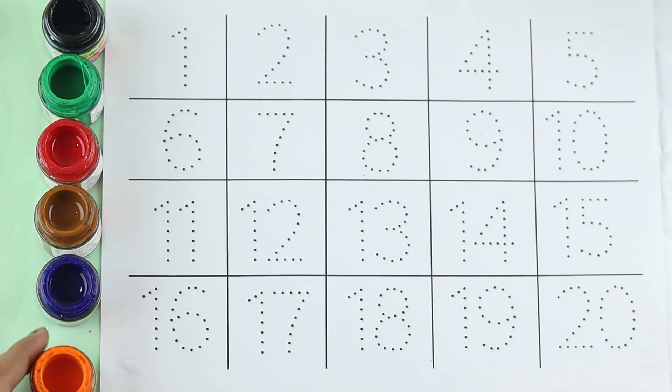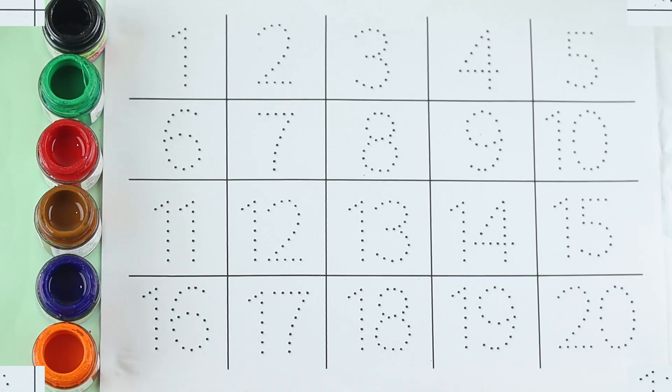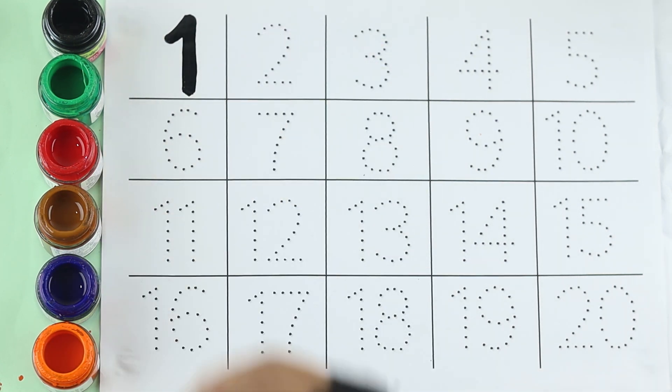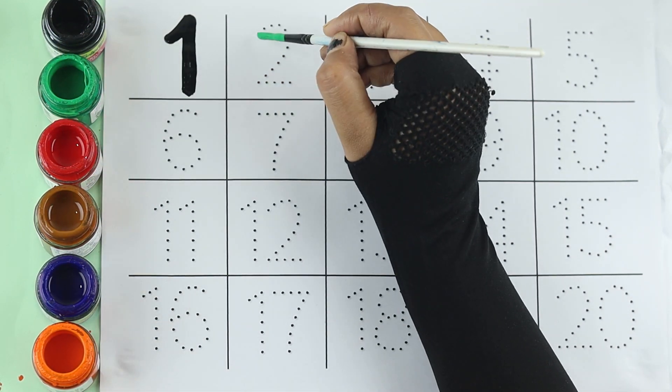Orange color, orange color. Black color, one. Green color, two.